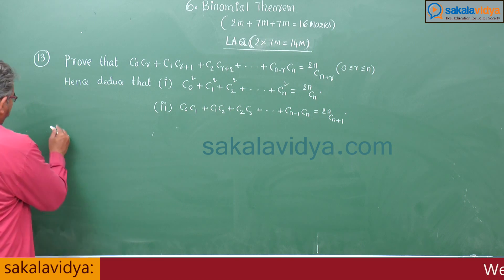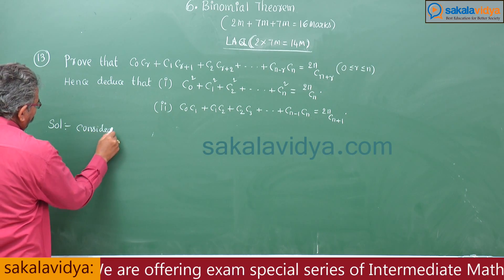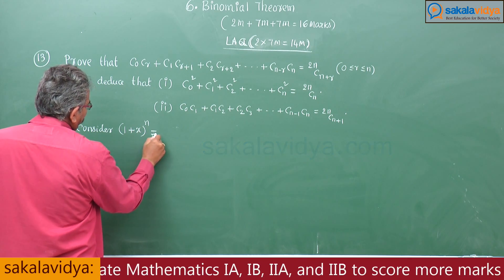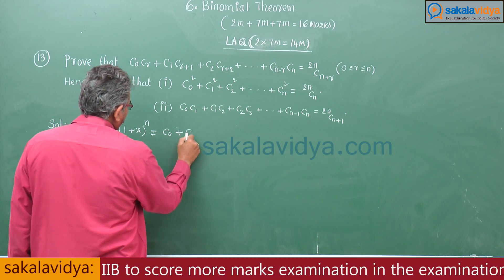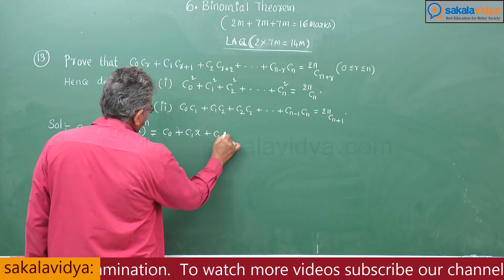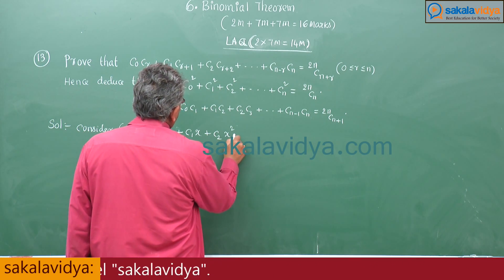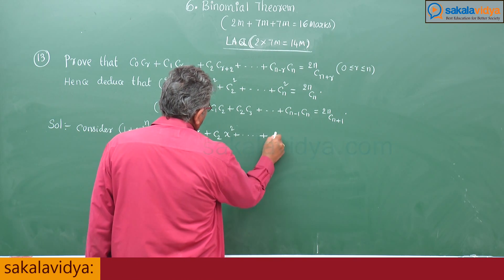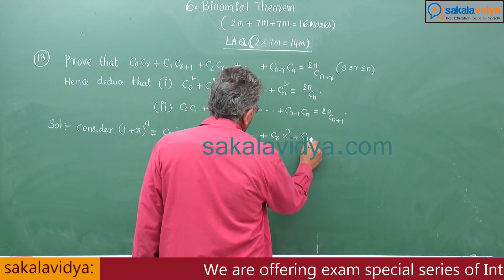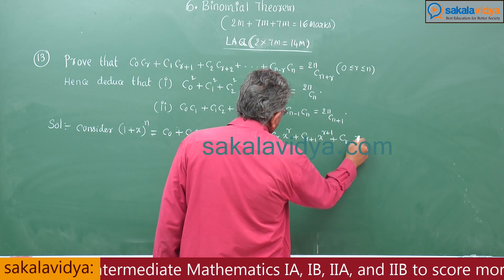Now consider the expansion of (1+x)ⁿ: this equals C₀ + C₁x + C₂x² + ... + Cᵣxʳ + Cᵣ₊₁xʳ⁺¹ + Cᵣ₊₂xʳ⁺². Call this equation 1.